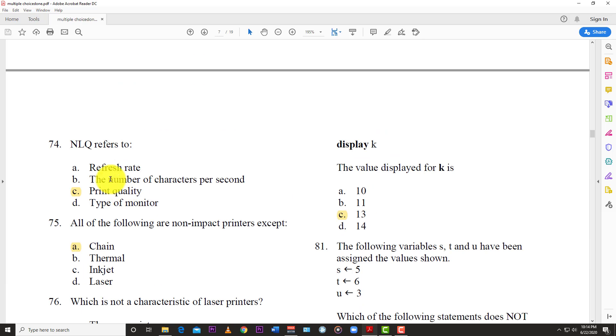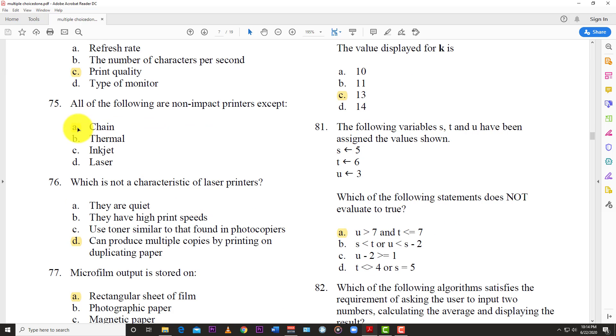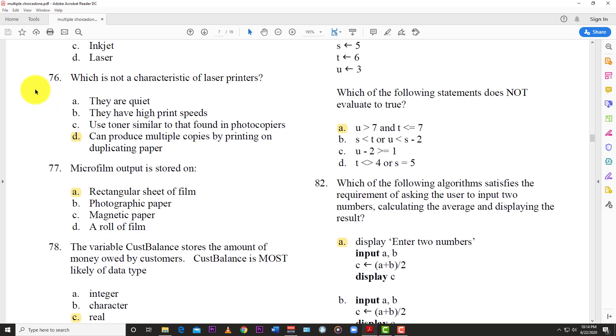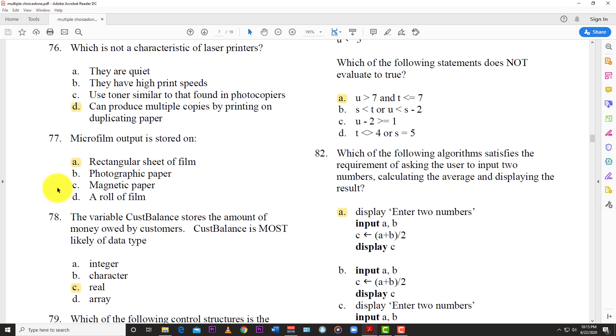Number 74: NLQ refers to C, print quality. Question 75: All of the following are non-impact printers except A, the chain. Question 76: Which is not a characteristic of laser printers? And the answer is D, can produce multiple copies by printing on duplicate paper. Question 77: Microfilm output is stored on A, rectangular sheet of film.